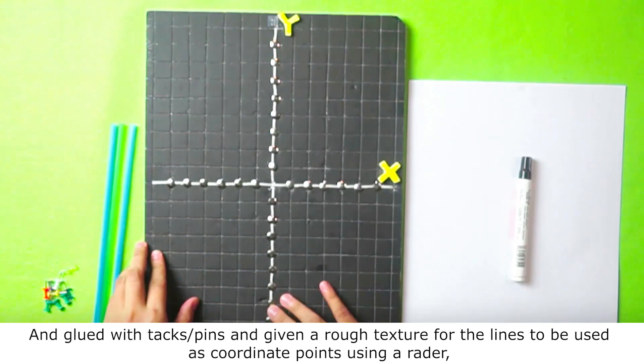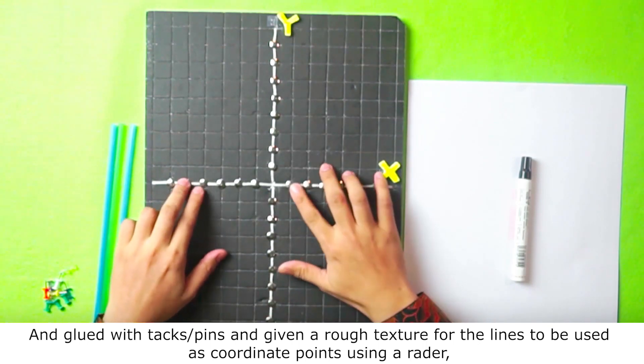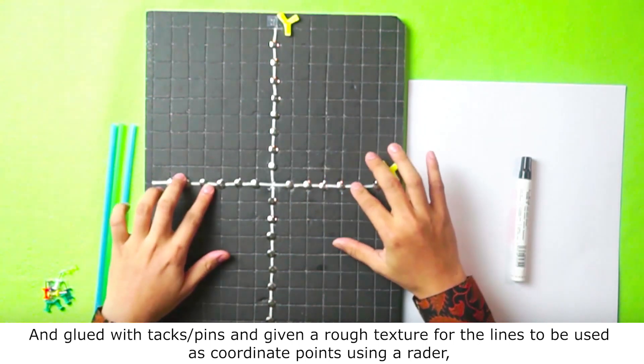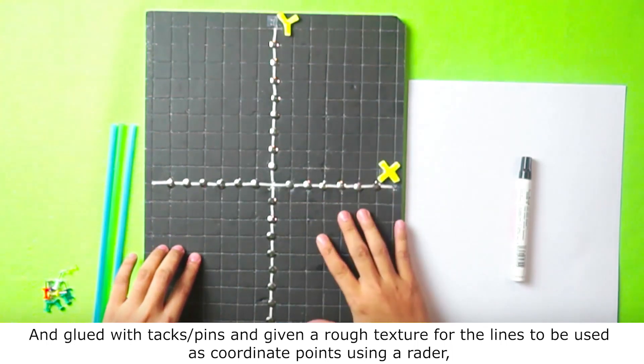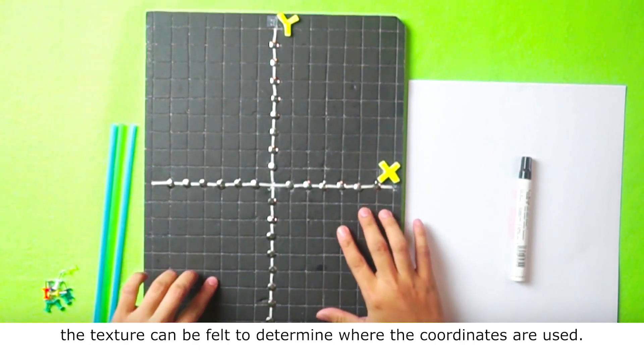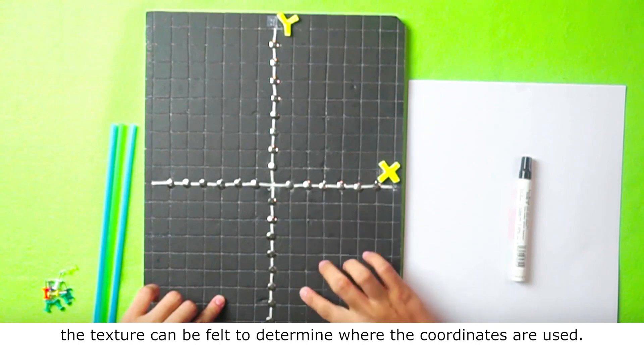And also glued with tacks or pins, and given a roof texture for the lines to be used as coordinate points using a ruler. The texture can be felt to determine where the coordinates are used.